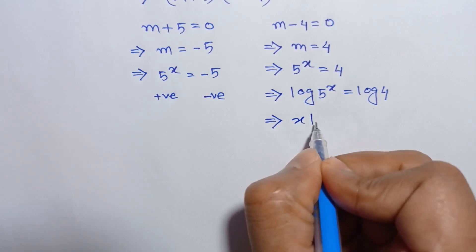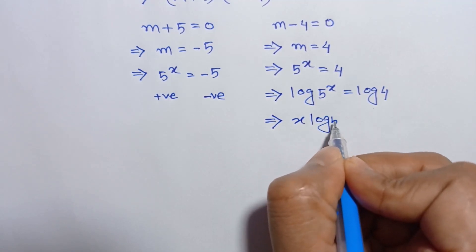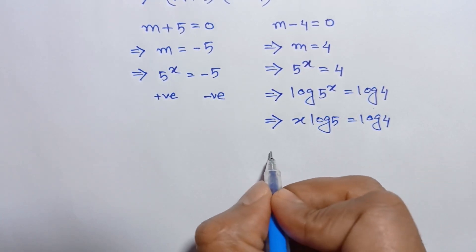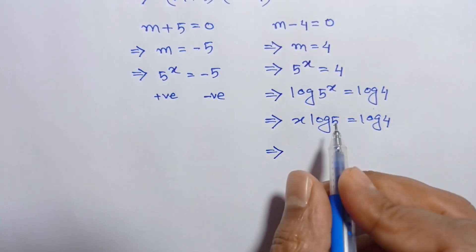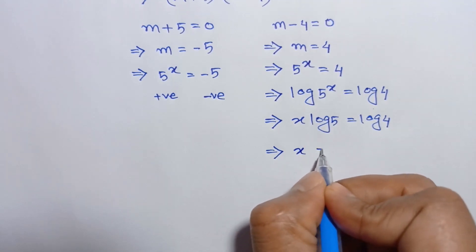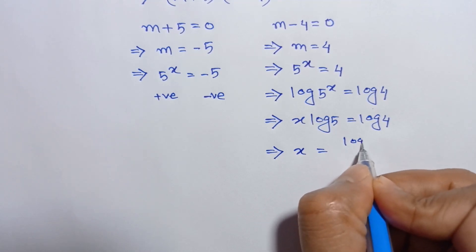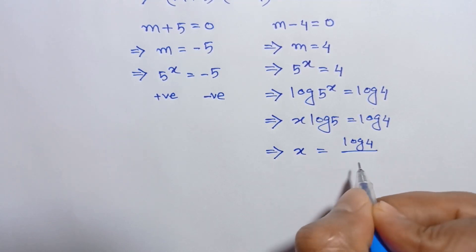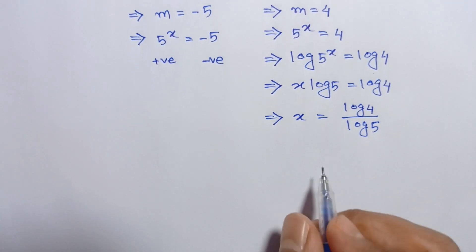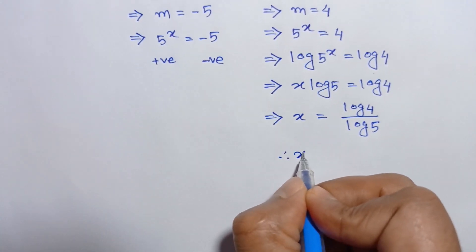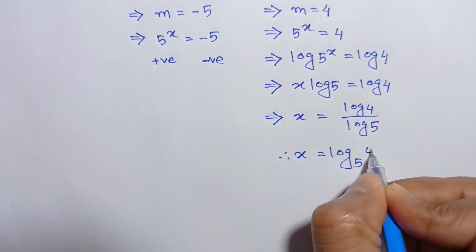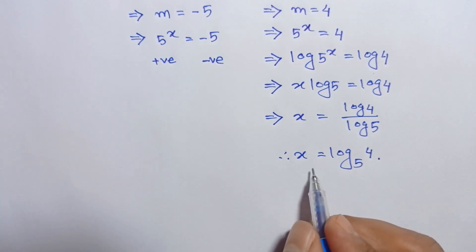According to the law of logarithm we can write it as x log 5 is equal to log 4. Dividing both sides by log 5, we will have x is equal to log 4 over log 5, which can also be written as log base 5 of 4. So the value of x is equal to log base 5 of 4.